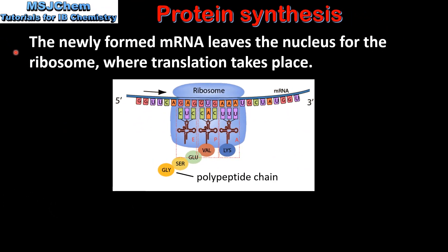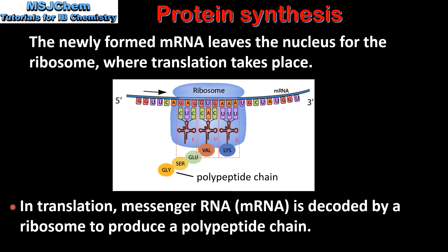The newly formed mRNA leaves the nucleus for the ribosome, where translation takes place. In translation, messenger RNA is decoded by a ribosome to produce a polypeptide chain.